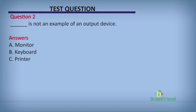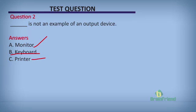Question 2: which of the following is NOT an example of an output device? A. Monitor. B. Keyboard. C. Printer. The answer is B — the keyboard is not an output device. The monitor and the printer are output devices, but the keyboard is an input device.